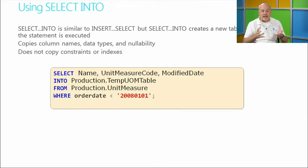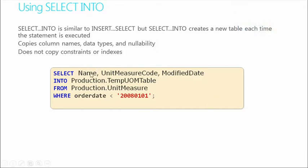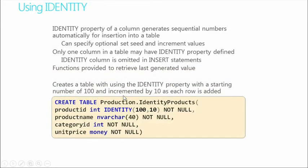We can also perform a SELECT INTO. We do a SELECT of name, unit measure code, and modified date INTO a temporary table. So we're taking content into a temp table. Before, when I wanted to use a temporary table, I could have created it from content inside the unit measure table — selecting those columns and inserting them into a new table called temp UOM table, using a WHERE clause to only include records with order date before January 1st, 2008.